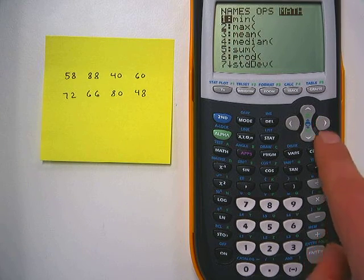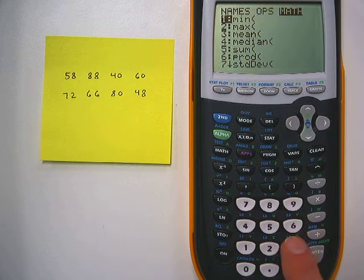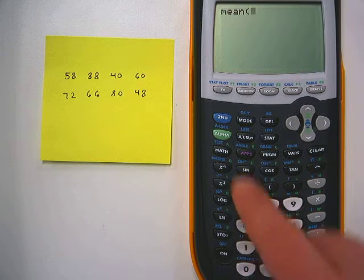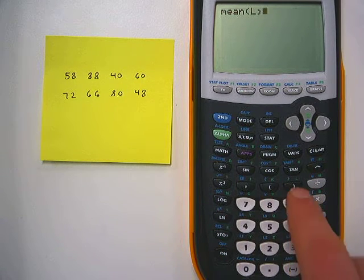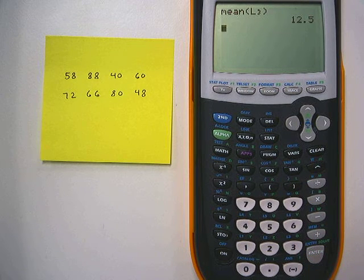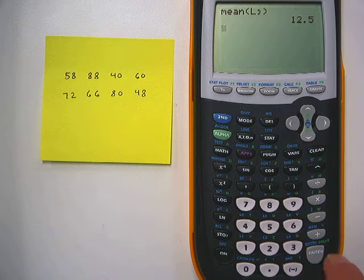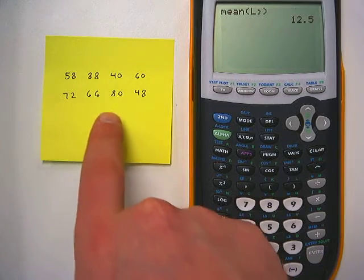We're going to hit 2nd and then our stat key for our list again. We're going to hit the right arrow twice to math. We're going to take the third option mean again and we want the mean of list 3. So this time we're going to hit 2nd and then the 3 key. Close parentheses and enter.